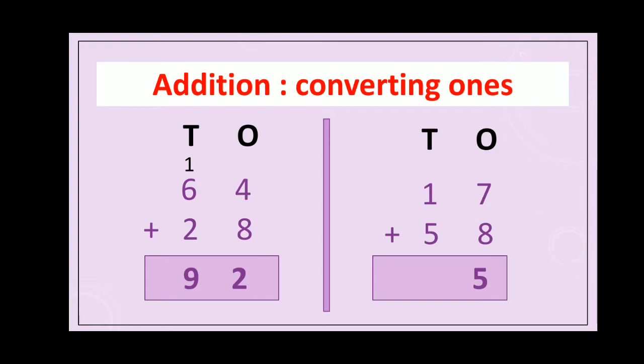Now another example: 17 plus 58. We add ones first. 7 plus 8 is equal to 15, which means 1 ten and 5 ones. So we write 5 in the ones column and 1 ten carries into the tens column. Now add tens: 1 plus 1 is equal to 2, and 2 plus 5 is equal to 7. The answer is 75.